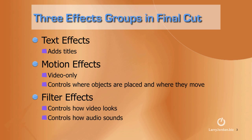There are three effects groups inside Final Cut Pro: text effects, motion effects, and filter effects. Text effects allow us to add titles to our video. Motion effects are video only and they control where objects are placed and where those objects move within the frame. And filter effects control how video looks and control how audio sounds.